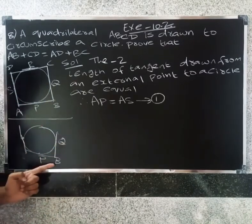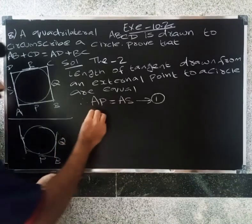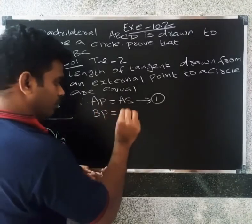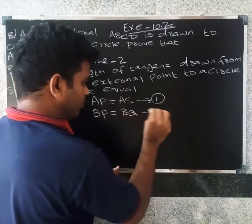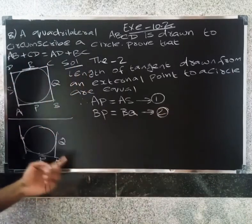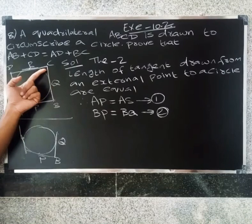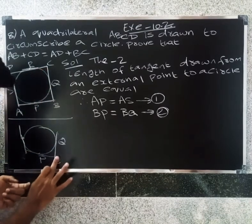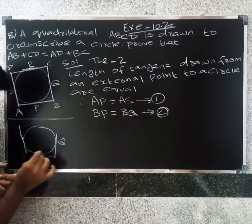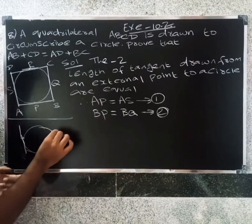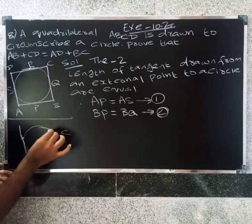BP = BQ because the length of tangents from external point B are equal. Next, from point C, we look at the tangents.